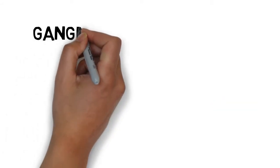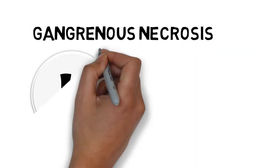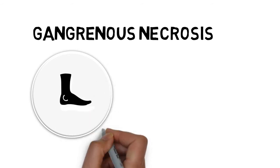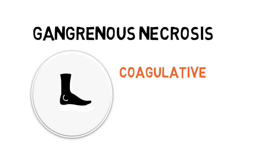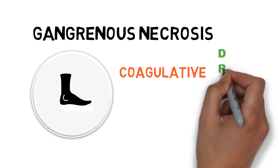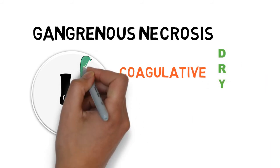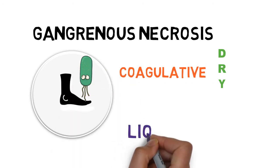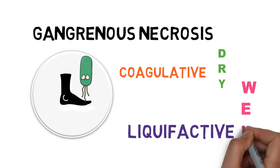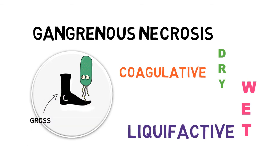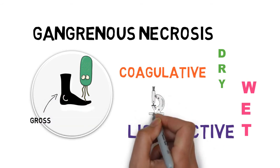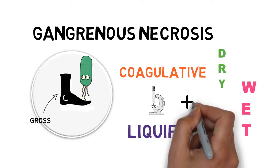The third pattern is gangrenous necrosis. It is not a specific pattern; it is a term used predominantly for a limb. When a limb loses its blood supply it undergoes coagulative necrosis — this is called dry gangrene. If there is a superimposed bacterial infection it causes liquefactive necrosis, so it is called wet gangrene. Grossly there will be black skin with putrefaction. Microscopically there will be a combination of coagulative and liquefactive necrosis, hence it does not have a specific pattern.